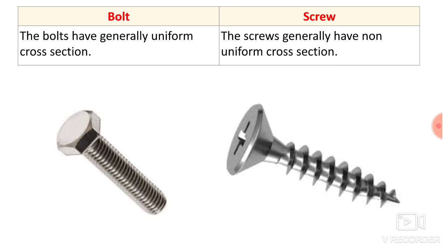The second difference: a bolt generally has a uniform cross section — as you can see in the first image, the bolt has a uniform cross section. The screw generally has a non-uniform cross section, as visible in the second image.